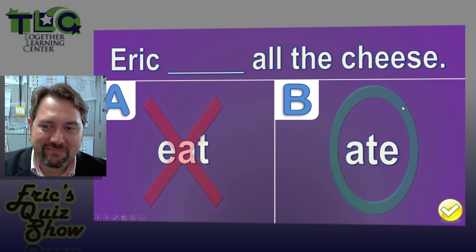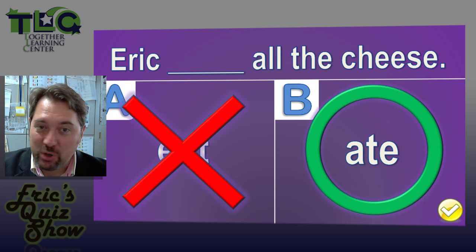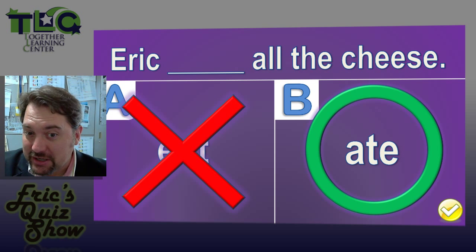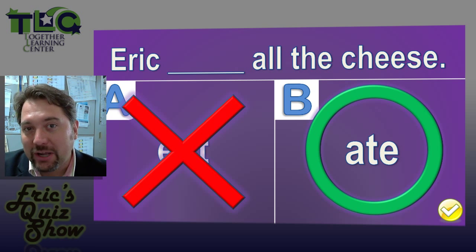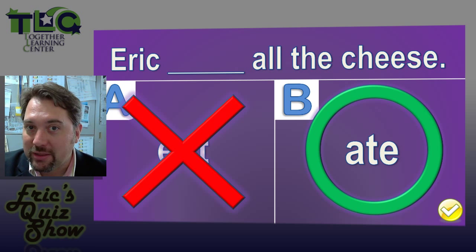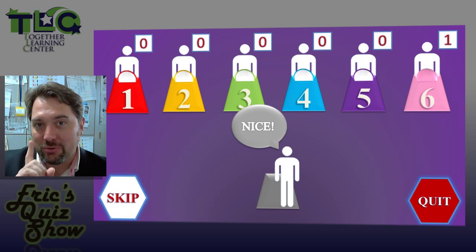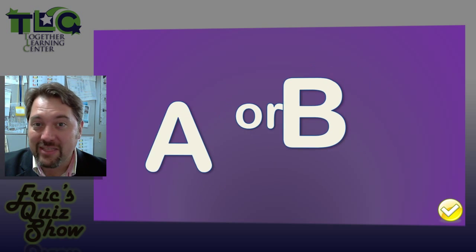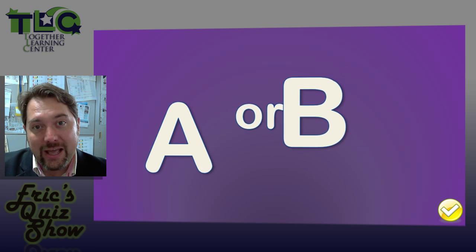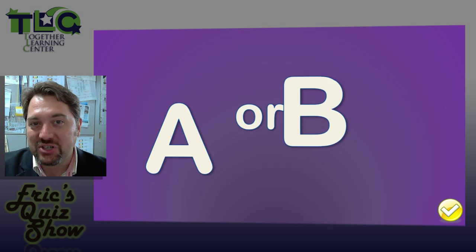We need to use past tense here because Eric is 'he,' and the third person is 'eats all the cheese,' not 'eat.' So Eric ate all the cheese — the answer is B. If you chose B, you get your one point. And that is the A or B type question.